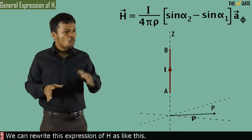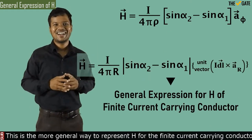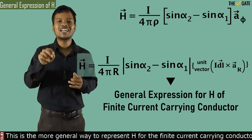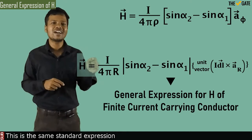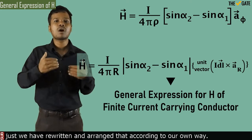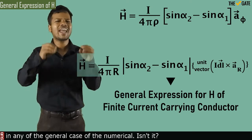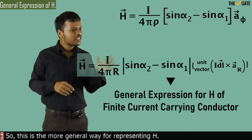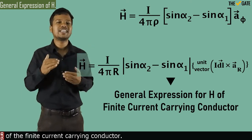It is very simple. We can rewrite this expression of H as follows — this is the more general way to represent H for the finite current-carrying conductor. Note that this is not a new expression; it is the same standard expression, just rewritten and arranged in our own way so that we could apply it in any general case of the numerical. This is the more general way for representing H of the finite current-carrying conductor.